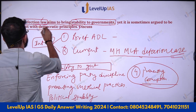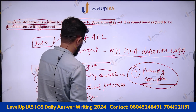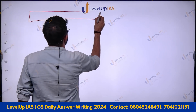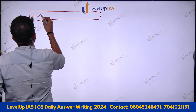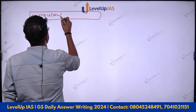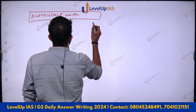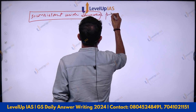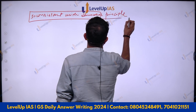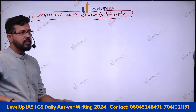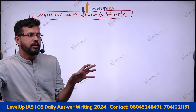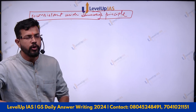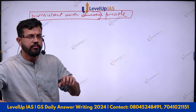The second part of the question is that the anti-defection law is inconsistent with democratic principles. Again we make another heading: 'Inconsistent with Democratic Principles.' It is very important that you take headings and subheadings from the question itself — this gives the examiner confidence that the student is writing what is being asked.